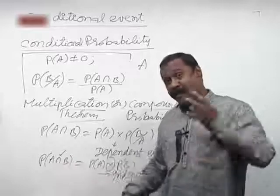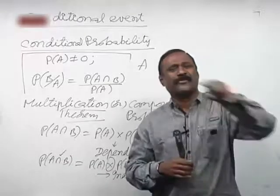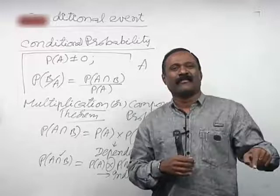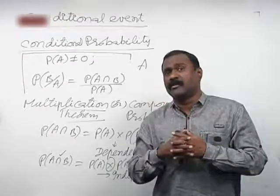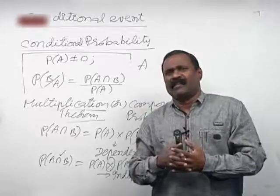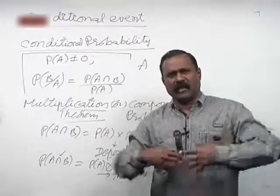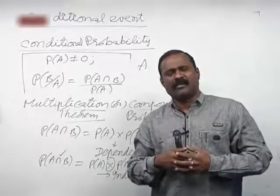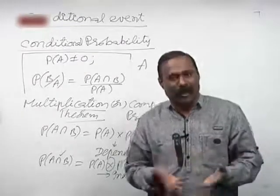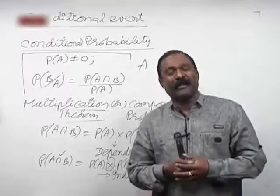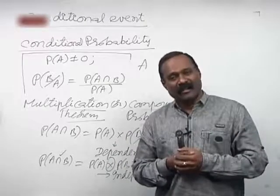So in that case, A intersection B intersection C — you can straightaway write intersection as multiplication. Whenever a problem is given in a class of 30 students and you are asked to solve it independently, the intersection becomes multiplication.